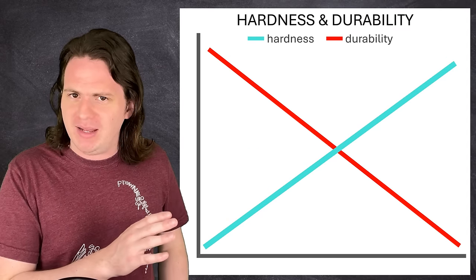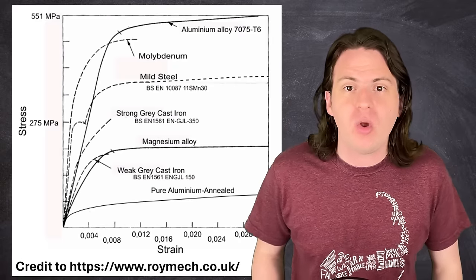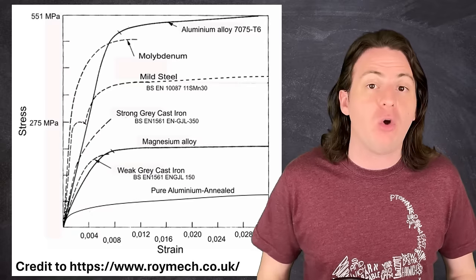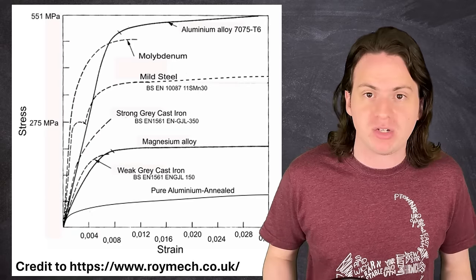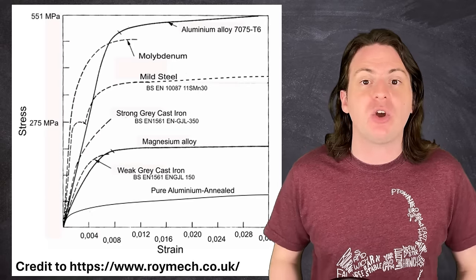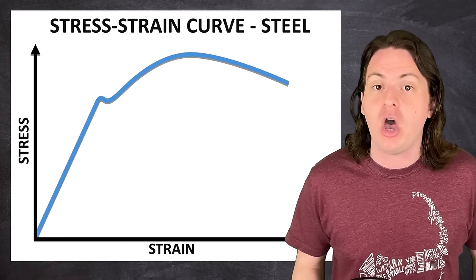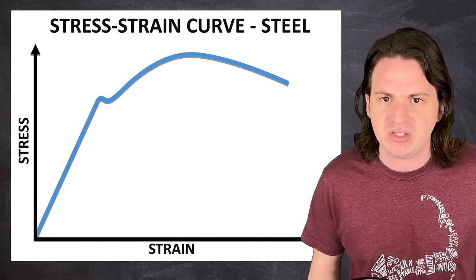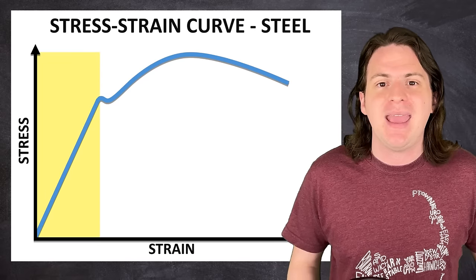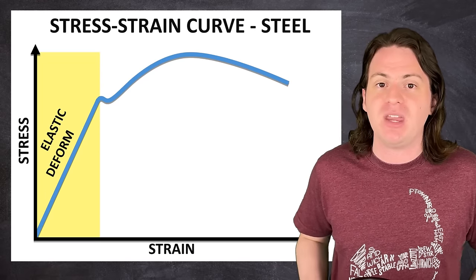Inversely related, that is. The best way to visualize durability is with something called a stress-strain curve, which shows how a material deforms under a given amount of pressure. Looking at a stress-strain curve for stainless steel, we can split it into three main regions.